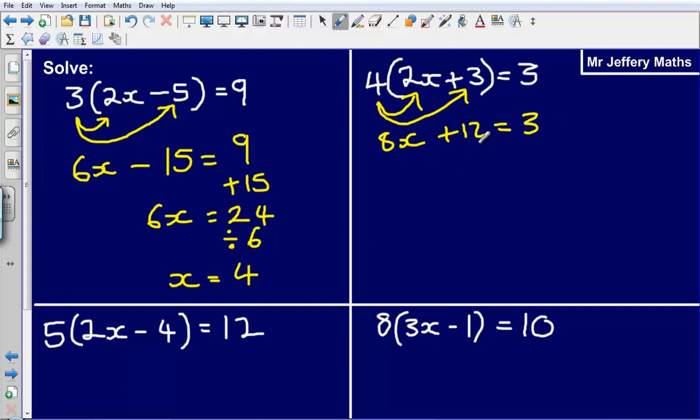Now 8x plus 12 equals 3. To get rid of this plus 12, to undo that plus 12 I'm going to subtract it, doing the opposite again. So that gives me 8x is equal to minus 9.